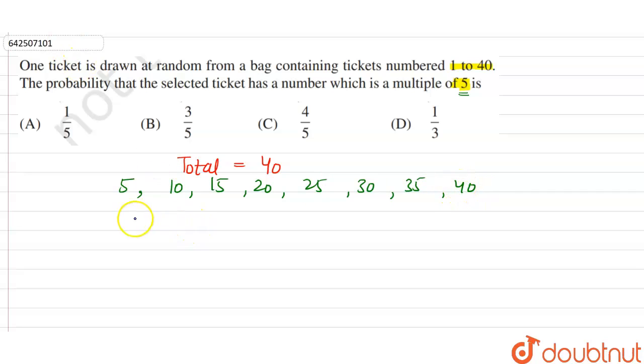Now, the probability of an event is equal to number of favorable outcomes divided by total outcomes. So the number of favorable outcomes are which are multiples of 5.